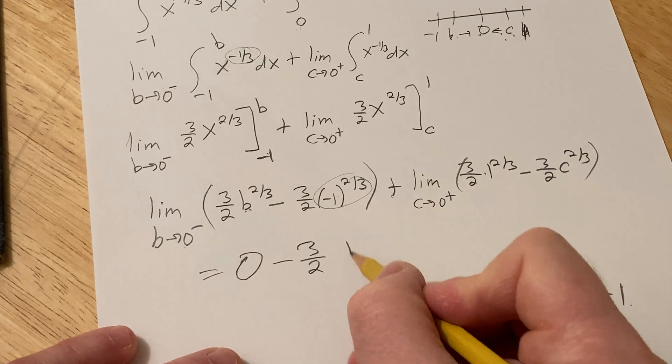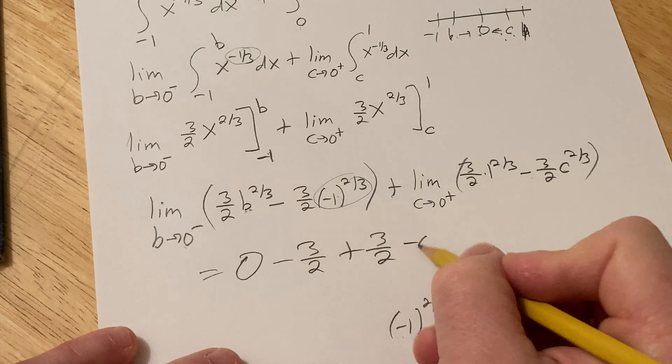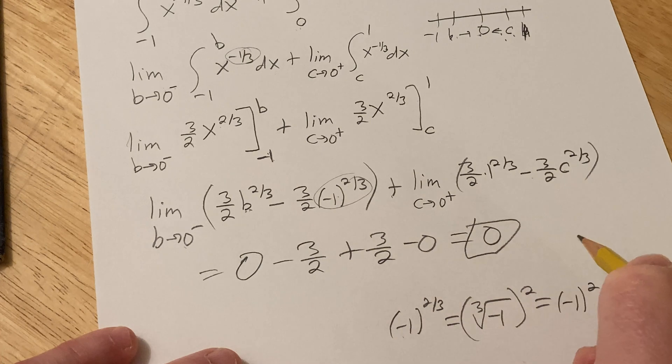Here this is plus three-halves, and then minus zero. I know I'm going a little bit quick, but I figured if I'm going to work this out anyways...